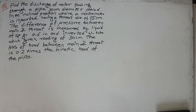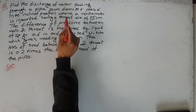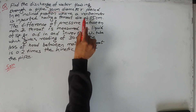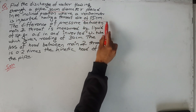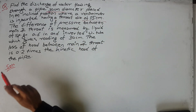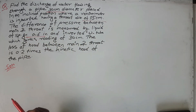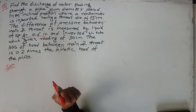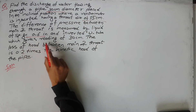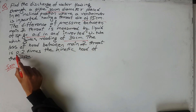This is a numerical problem related to an inclined venturimeter. Find the discharge of water flowing through a pipe of 30 cm diameter placed in an inclined position, where a venturimeter is inserted having a throat diameter of 15 cm. The difference of pressure between the main and throat is measured by a liquid of specific gravity 0.6, using an inverted U-tube manometer which gives a reading of 30 cm. The loss of head between the main and throat is 0.2 times the kinetic head.